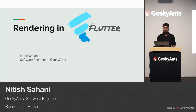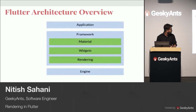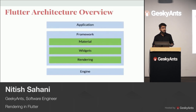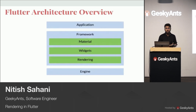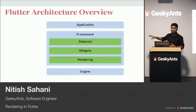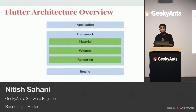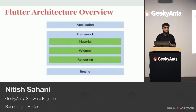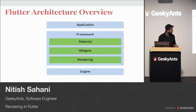Before diving into the rendering part, let's see where that resides. Here you can see a sketch of the overall architecture of Flutter. At the bottom there is an engine which exposes a very low level API. Above it there is a framework composed of several layers. This talk is about the lower level rendering layer, which is responsible for organizing the screen, allocating space for different widgets, and making those widgets appear on screen.